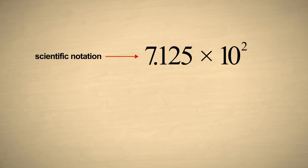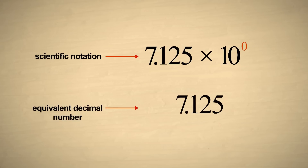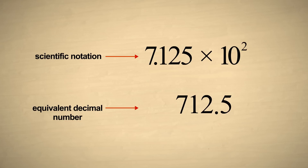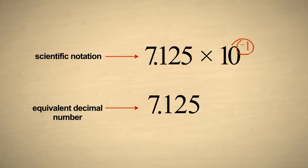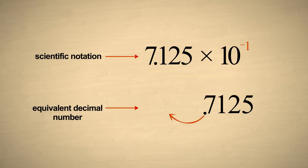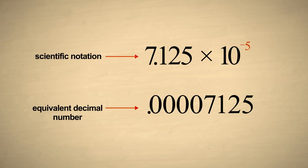To convert a number written in scientific notation to a standard decimal number, we simply multiply the first part times the second part. This moves the decimal point to the proper position in the number. If the exponent of the multiplier is zero, the decimal point does not move, since multiplying by ten to the zero power is the same as multiplying by one. If the exponent of the multiplier is positive, the decimal point is moved that many columns to the right. If the decimal point must move beyond the last digit, zeros are added to the end of the number to accommodate its new position. If the exponent is negative, the decimal point is moved that many columns to the left. If the decimal point must move beyond the first digit, zeros are added to the beginning of the number to accommodate its new position.